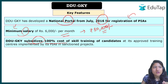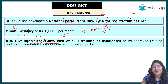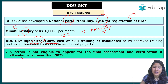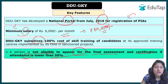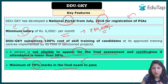No money is taken from candidates at any stage — registration, certification, or examination. However, the government, which subsidizes 100% of the cost, has two requirements: first, attendance must not be lower than 50%; second, candidates must score a minimum of 70% marks in the final exam to receive certification.